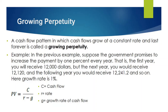A growing perpetuity is a cash flow pattern in which cash flows grow at a constant rate and last forever. For example, assume that the government has recently acquired your house and will pay you $12,000 during the first year. During the second year, you will receive $12,120, and during the third year, you will receive $12,241.20, and so on. The government pays you 1% extra money every year, so the growth rate of your cash flow is 1%. These types of cash flows are known as growing perpetuity.